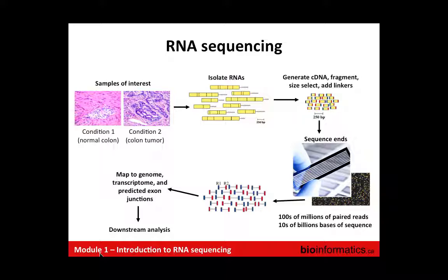From the RNA, we generate cDNA fragments, size-select them, add linkers, and produce small cDNA fragments with sequencing adapters on either side, typically 250 to 500 base pairs in size. These molecules are flowed across an Illumina flow cell — about the size of a microscope slide with eight channels. Sequencing happens in cycles of ATCG, imaging the flow cell and observing the incorporation of each of the four bases, building up sequences cycle by cycle.